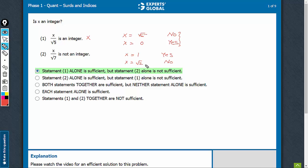Similarly, if we had taken 1.2 or something, we would get 1.2 over root 7 is not an integer, and no—x is not an integer; 1.2 is not an integer. So once again, yes and no are both possible for statement 2 also. Statement 2 is not sufficient.